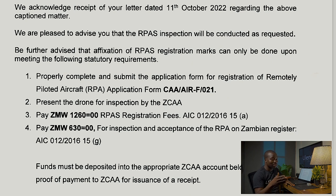The email further advised that fixation of airport registration marks can only be done upon meeting the following statutory requirements: number one, properly complete and submit the application form for registration of the remotely piloted aircraft (RPA), application form CAA/AIR/F/021; present the drone for inspection by the Civil Aviation Authority of Zambia; pay 1,260 kwacha for registration fees; and pay 630 kwacha for inspection and acceptance of the RPA on the Zambian drone register. You must deposit the amount into the account, bringing the total to 1,890 kwacha.